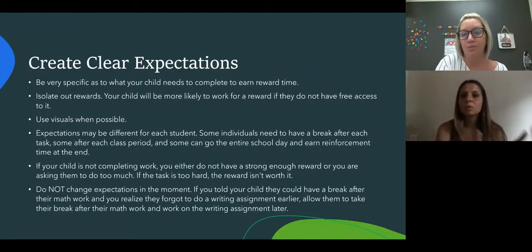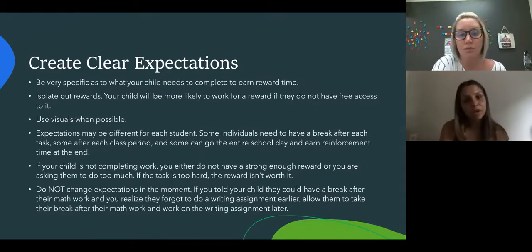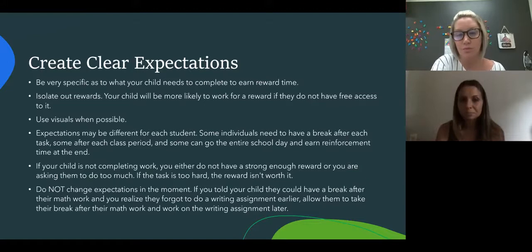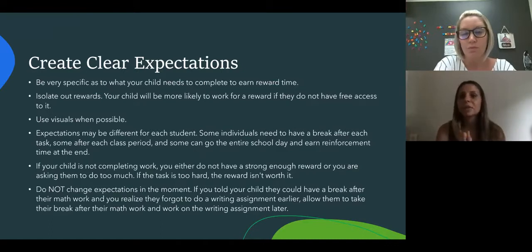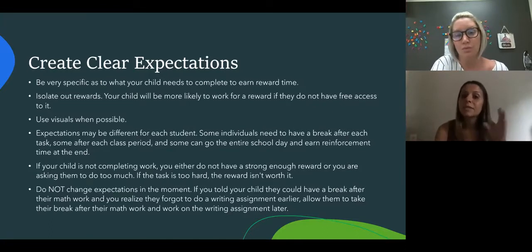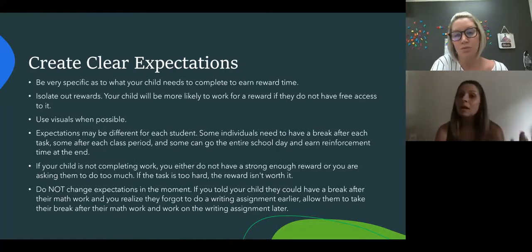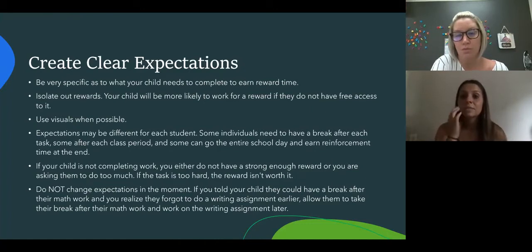When using if-then statements — you have to complete this first and then you can have whatever the reward is — first make sure you're placing very clear expectations. We don't want any gray area, because every kiddo is going to find that gray area super quick. Be very specific as to what they need to complete in order to earn that reward time. Isolate out those rewards: this is the expectation; once you complete that, then you can have this. However, if they do not complete the expectation, the reward goes away and they will not have access to it until they come back and complete it. Use visuals whenever possible — visual checklists — so they can see that they're getting closer and closer to that reward time.